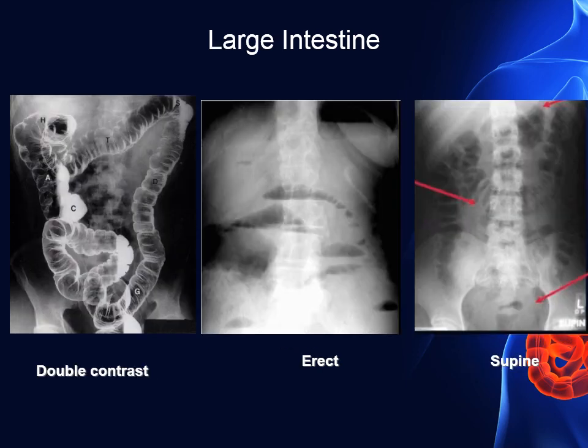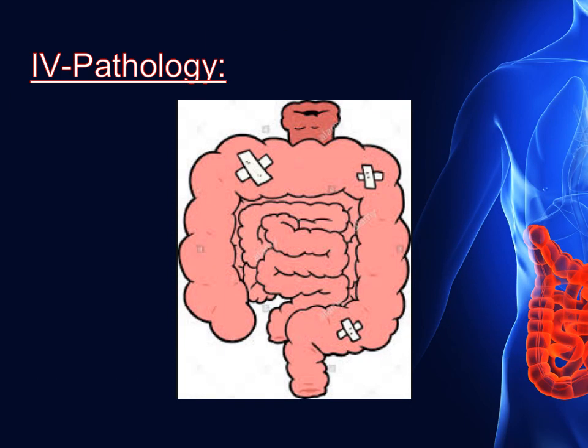Here is the large bowel: the first image shows double contrast, with the contrast making a thin film delineating the wall and the gas in the center. The other two pictures show plain X-ray — erect with the air-fluid level, which is acceptable, and supine showing an inverted U-shape gas with characteristic haustration of the large intestine. Any deviation from the normal will be a pathology.